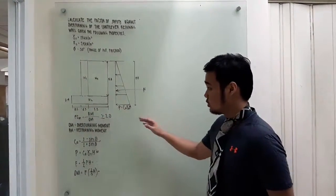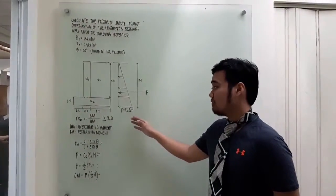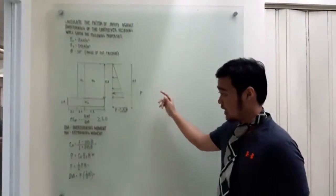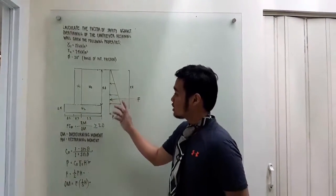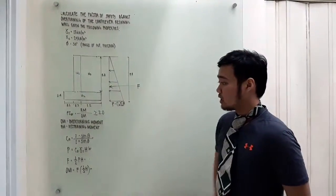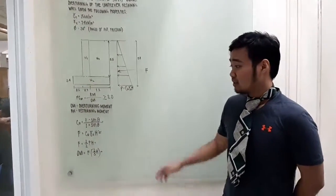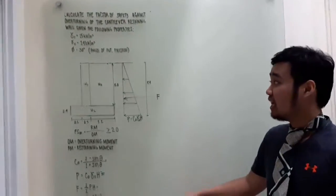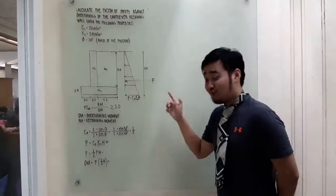The overturning is due to the lateral soil pressure, which is the coefficient of active soil pressure times the density of soil times the overall height of 5.4 m. The restraining moment is due to the weight of the overall structure plus the weight of the soil above the heel. To determine the coefficient of active soil pressure, the formula is (1 - sin θ) / (1 + sin θ), substituting the angle of internal friction.